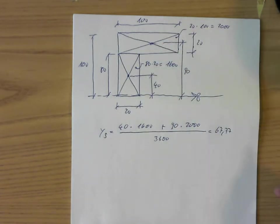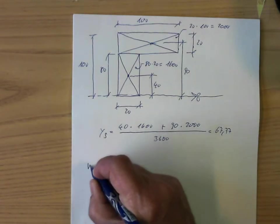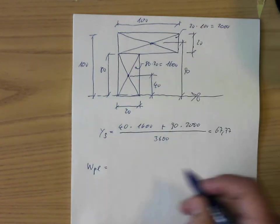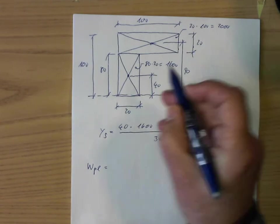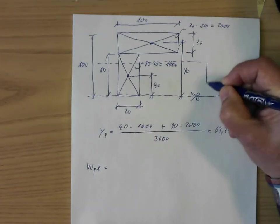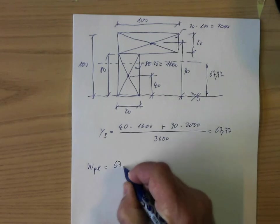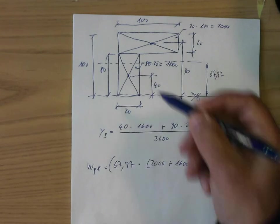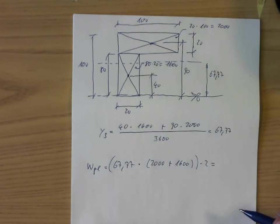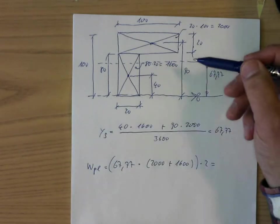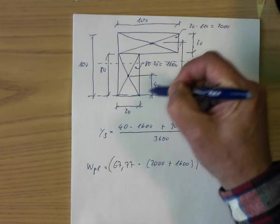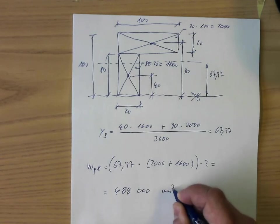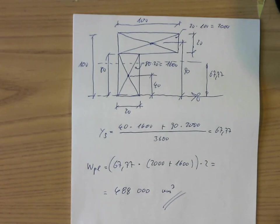Now, to calculate the plastic modulus, we have to multiply the distance in this direction of the center of gravity with the area. We have it on the other side at the same time, so we have it 2 times. This position where the center of gravity is: 67.77 times area 3,600, times 2. We have to calculate the first moment of inertia about the axis of interest, which means distance of center of gravity times the area. If we calculate it, we get the result 488,000 millimeters cubed.